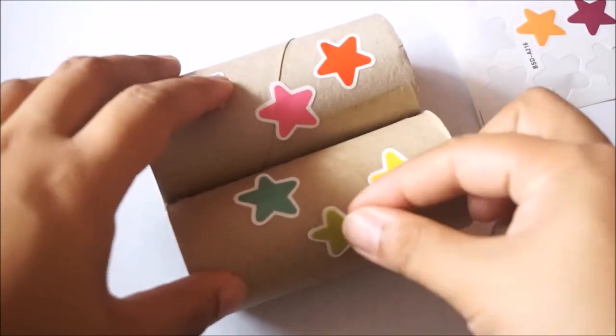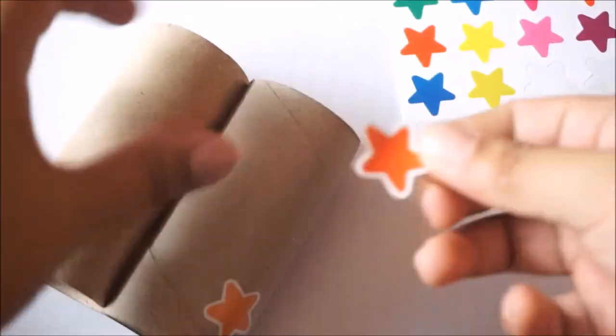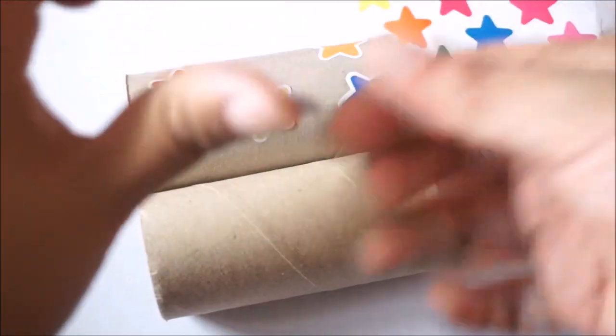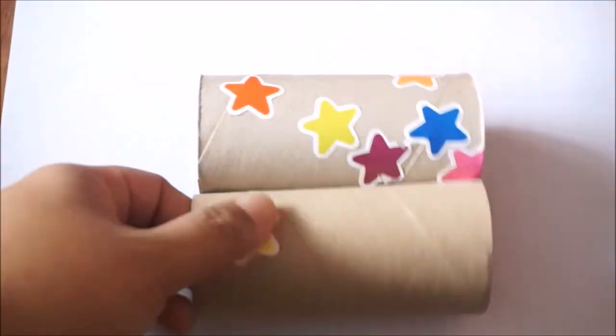You can choose whatever sticker that you would like to put on your binoculars and stick as many as you like. You can still put designs on it by putting more colors or by drawing something on it. You don't really need to copy the exact design that I'm doing right now, because this only serves as your guide. And you actually have all the freedom to design it the way that you want it to be. If you like this kind of activity, you can check out the other videos of my craft activities.